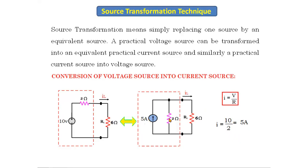Like this we convert a voltage source to a current source. There is no difficulty — just convert the practical voltage source into a practical current source. We do not change anything after the dotted part; even if there are 100 resistors after it, we redraw the same remaining circuit without changes.